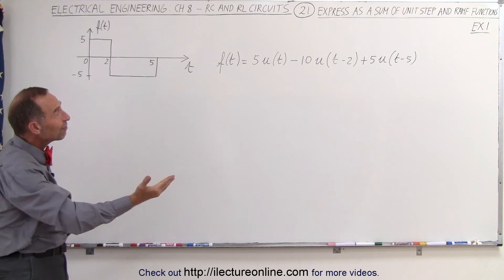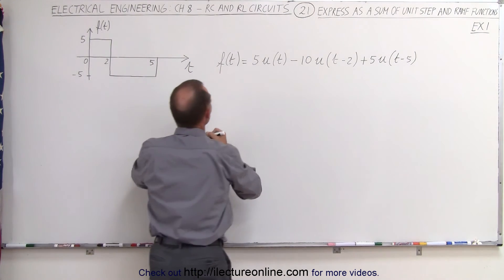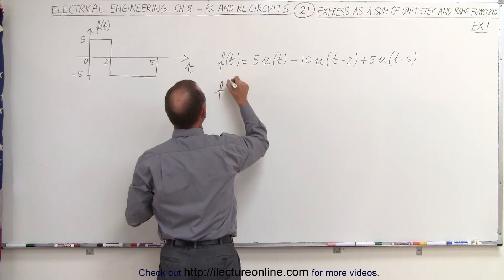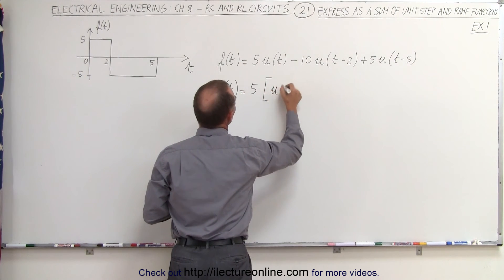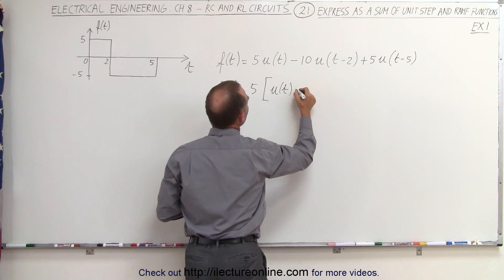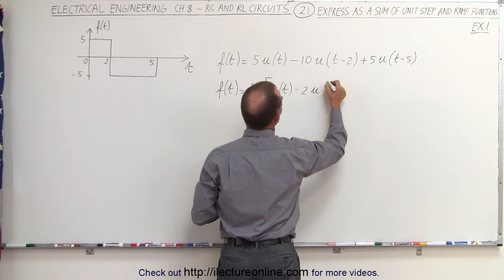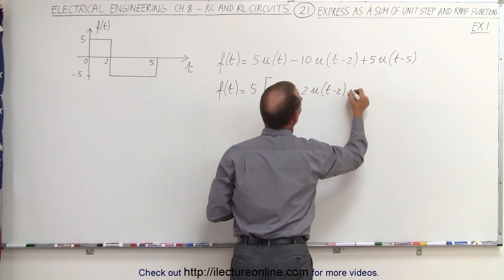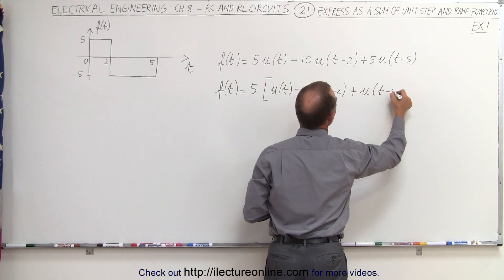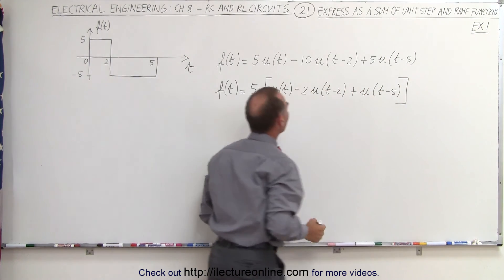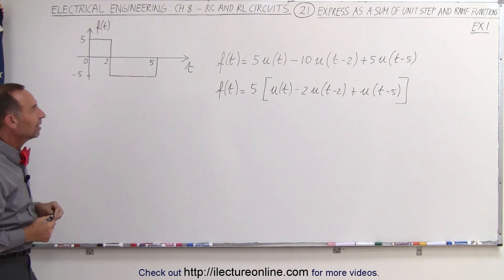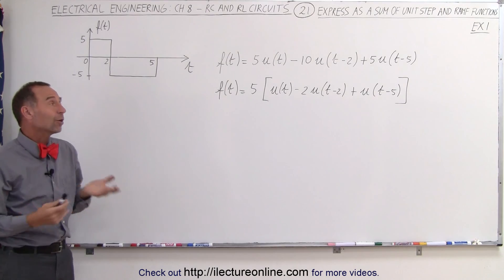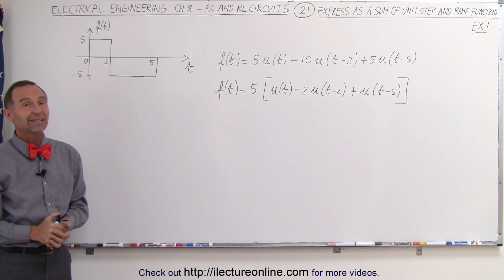Now that can be simplified by factoring out a 5, and so we can say that the function f(t) can be written as 5 times the unit step function at t minus 2 times the unit step function at t minus 2, plus the unit step function at t minus 5. And that will then be the representative of what we have here as an input function. So actually, once you get the hang of it, it's not that difficult.